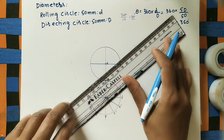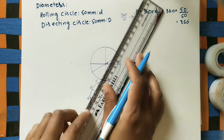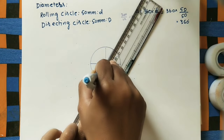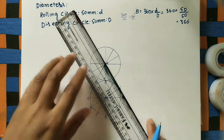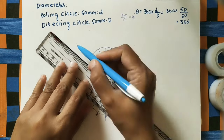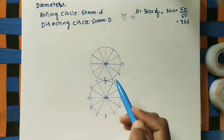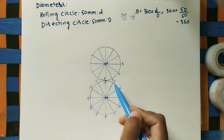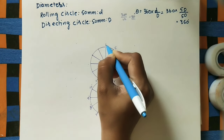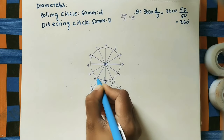Do the lines within the directing circle. After dividing into 12 divisions, give the names: mark 1 near 1-dash, then 2, 3, 4, 5, 6, 7, 8, 9, 10, 11, and 12.